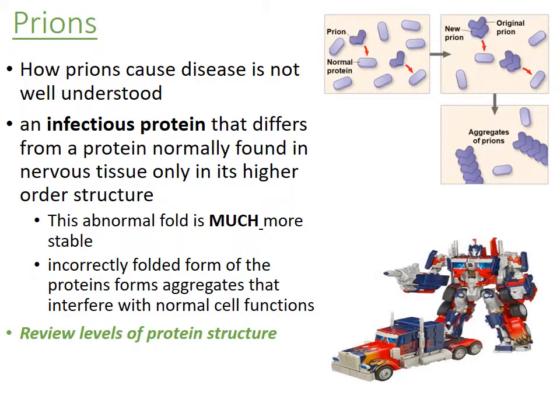Prions — or some people say prions — are not very well understood. The best way we can describe them is as an infectious protein that differs from proteins normally found in nervous tissue only by its higher-order structure. With protein structure, you have primary, secondary, tertiary, and quaternary structure. Prions have the same amino acid sequence, but they're misfolded or abnormally folded. Unfortunately, this abnormal fold is much more stable than the normal fold, and the incorrectly folded form aggregates, which interferes with normal cell function.